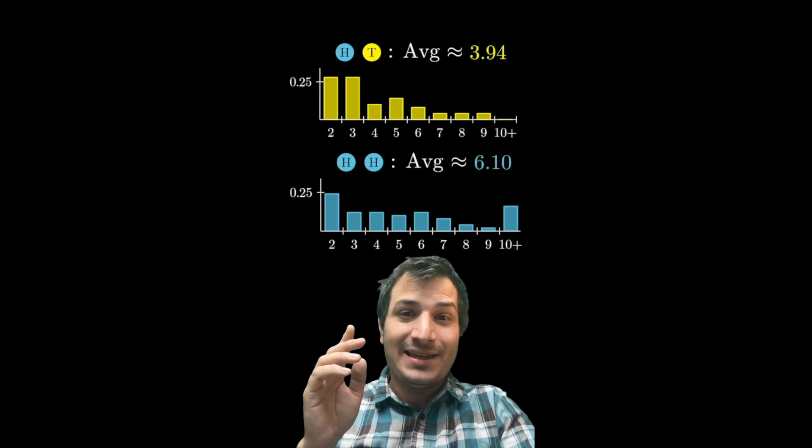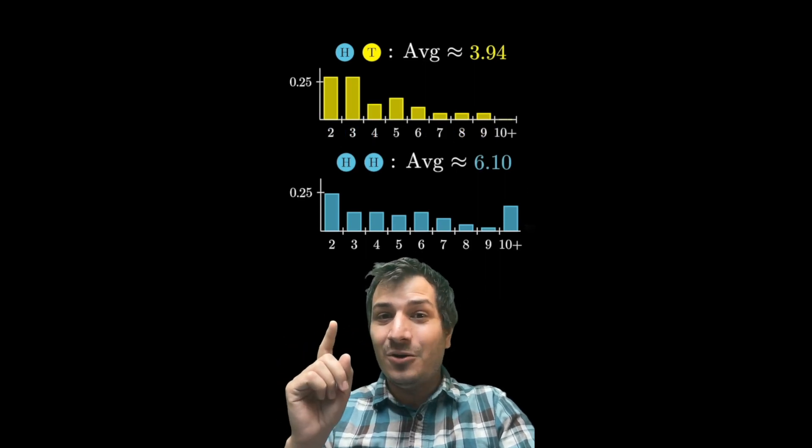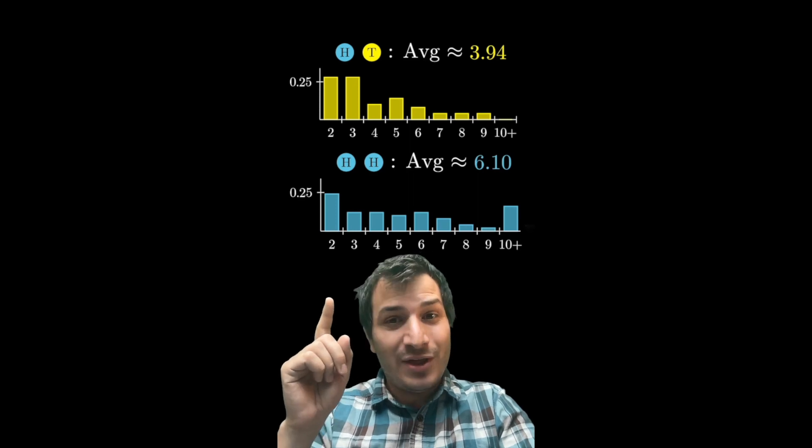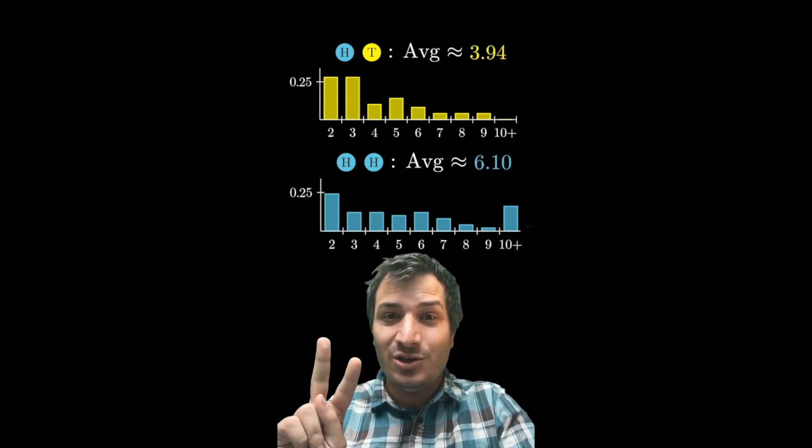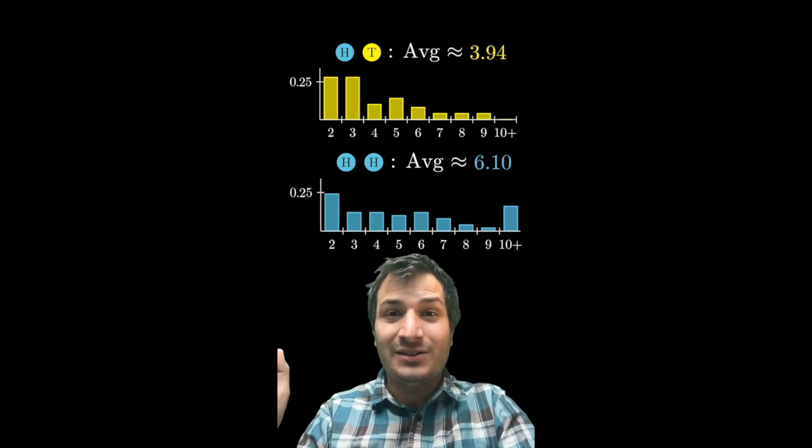And here's an experiment I did. I ran both of them 50 times. And you can see that even though there is a 25% chance for both heads, heads, and heads, tails to come up in exactly two flips, the other probabilities are all different.